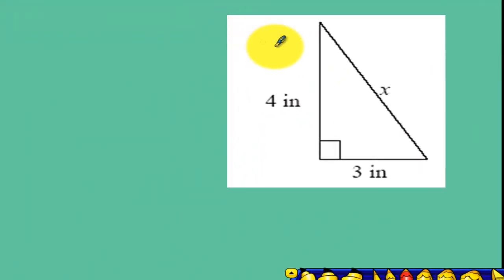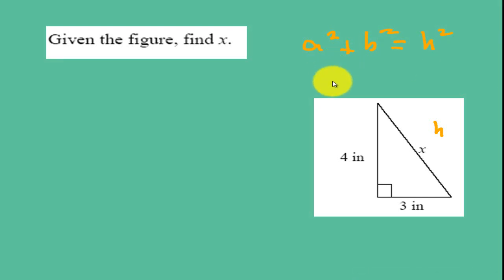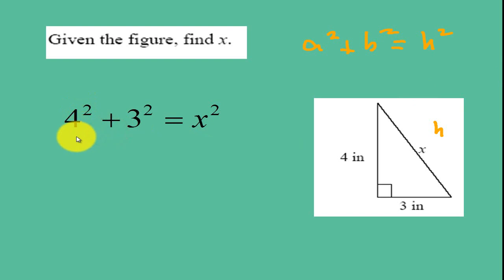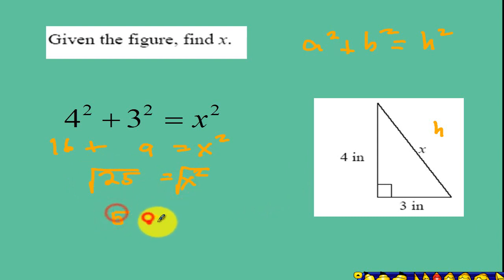Next example: given this figure, find the value of X. Based on this illustration, X is our hypotenuse. So we have legs 4 and 3. Using the formula, A squared plus B squared equal to your hypotenuse squared. Replacing your legs A and B by 4 and 3 respectively, we get 4 squared plus 3 squared equal to X squared. Now 4 squared is 16, 3 squared is 9. 16 plus 9 is 25 equal to X squared. Take the square root of both sides and you will get 5 equal to X. So your hypotenuse here is equal to 5.